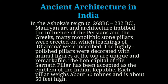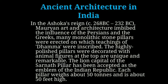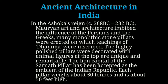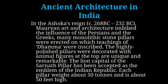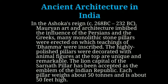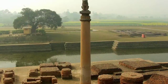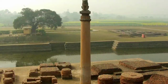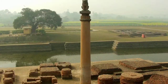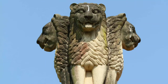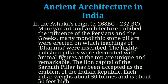In Ashoka's reign, from 268 BC to 232 BC, Mauryan art and architecture absorbed the influence of the Persians and the Greeks. Many monolithic stone pillars were erected, on which the teachings of Dhamma were inscribed. The highly polished pillars were decorated with animal figures at the top, and are unique and remarkable. The lion capital of the Sarnath pillar has been accepted as the emblem of the Indian Republic. Each pillar weighs about 50 tons and is about 50 feet high.